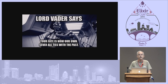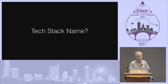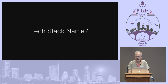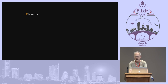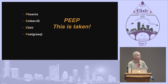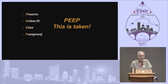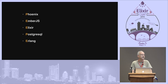Here it is. The question is: we are starting to integrate with a bunch of different systems and we need a tech stack name. How many here are using Ember.js? That's wonderful stuff. Some people have actually started a tech stack and named it — it's got Phoenix, Ember.js, Elixir, and Postgres. They called it PEEP. This is taken — I found this — and I thought you can do so much better than that. You also have Erlang and Ecto. So I leave you with that.